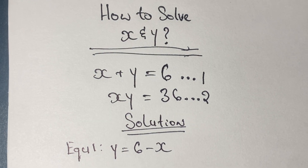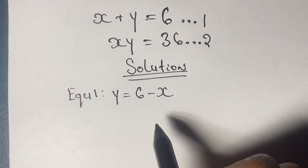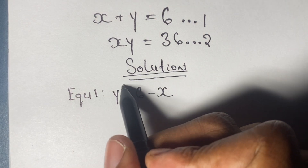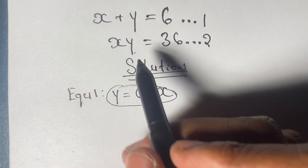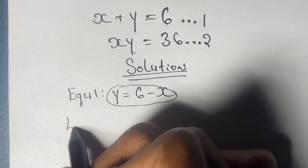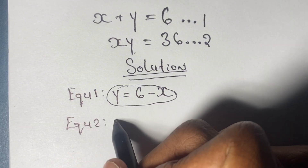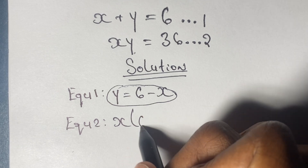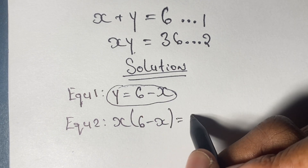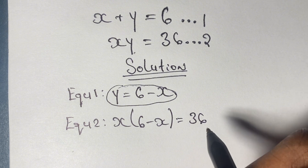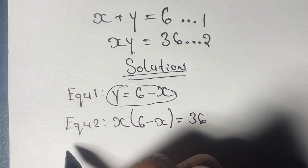The method we're going to be using to solve this problem is what is known as the substitution method, where we substitute the value of y. In equation one, x plus y is equal to 6, we make y the subject and have y is equal to 6 minus x. Then we take equation two and substitute the value of y into it, where we have x times (6 minus x) equal to 36.